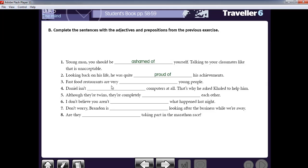Number three. Fast food restaurants are very popular with young people. Of course young people and fast food restaurants are very familiar or popular with young people. Number four. Daniel is not familiar with computers at all. So that's why he asked Khalid to help him. He is not very good at using computers. So he is not familiar with.